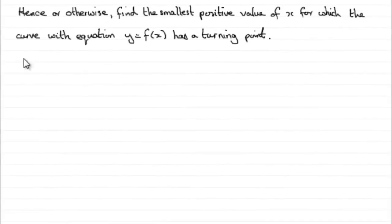Now for the last part, it says hence or otherwise, find the smallest positive value of x for which the curve with equation y equals f of x has a turning point. Now, we know that at a turning point, f dash x, the first differential of x, must equal 0.